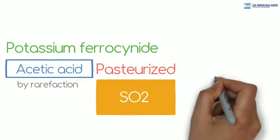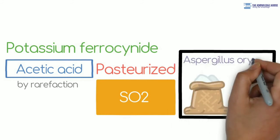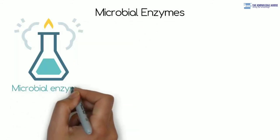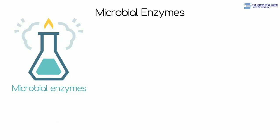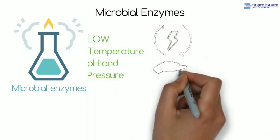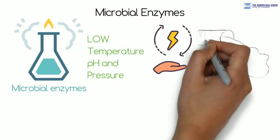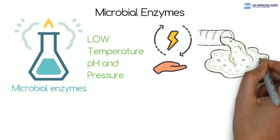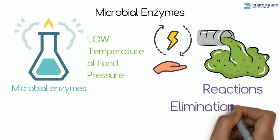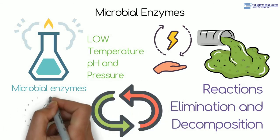Soy sauce is produced by fermentation of the mixture of flour of wheat or rice and soybean with the help of the fungus Aspergillus oryzae. Microbial enzymes. Nowadays, instead of chemical catalysts, microbial enzymes are used in chemical industry. These enzymes are active at low temperature, pH and pressure, due to which energy is saved and erosion-proof instruments are also not necessary. Enzymes carry out specific processes, hence unnecessary by-products are not formed, due to which expenses on purification are minimized. In case of microbial enzymatic reactions, elimination and decomposition of waste material is avoided and enzymes can be reused. Hence, such enzymes are eco-friendly.